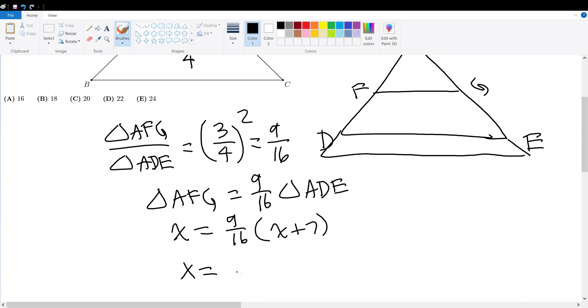In other words, X must be equal to 9 over 16X plus 63 over 16. Simplifying, 7X over 16 gives 63 over 16.